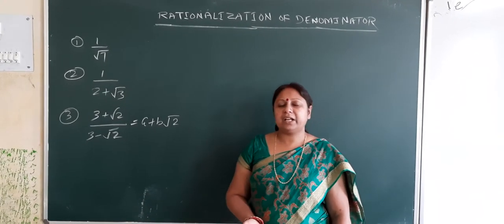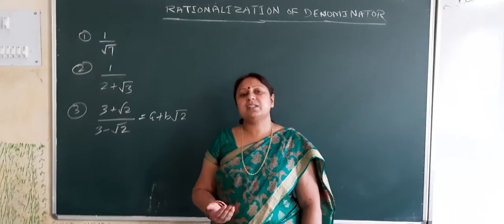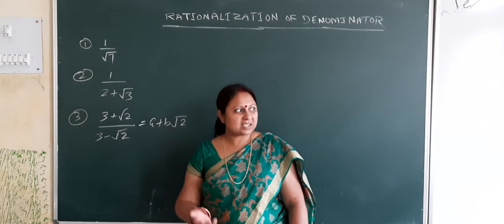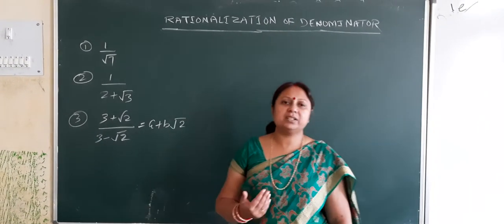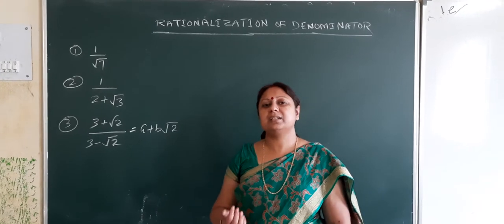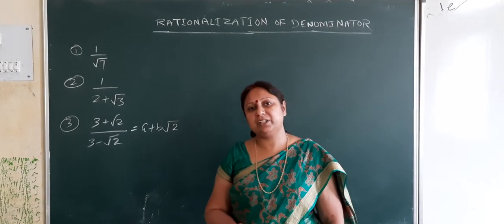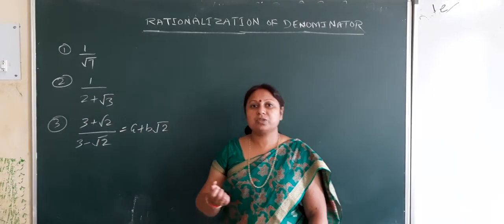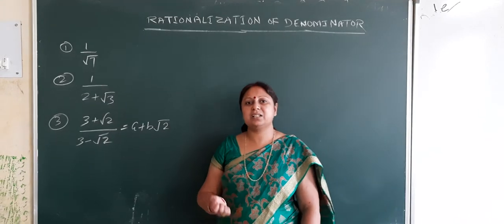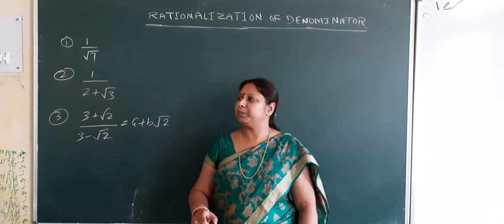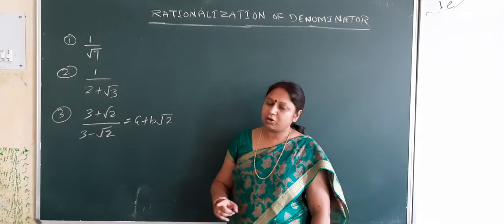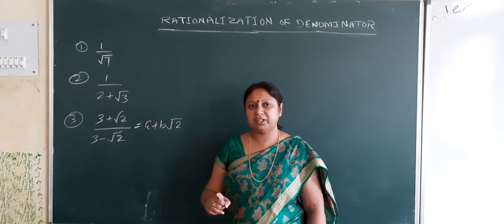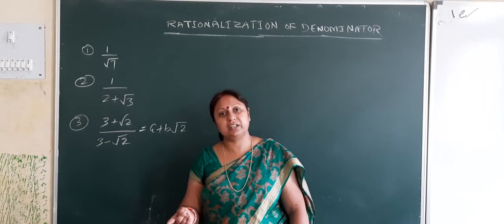Before that, you should know what an irrational number is. An irrational number is a number whose decimal is neither terminating nor repeating. For example, root 3, root 5, root 7, root 8 — numbers which are not perfect squares come under irrational numbers.